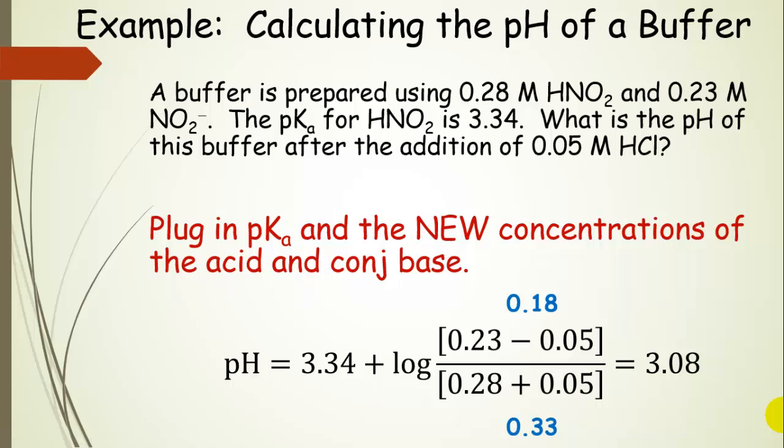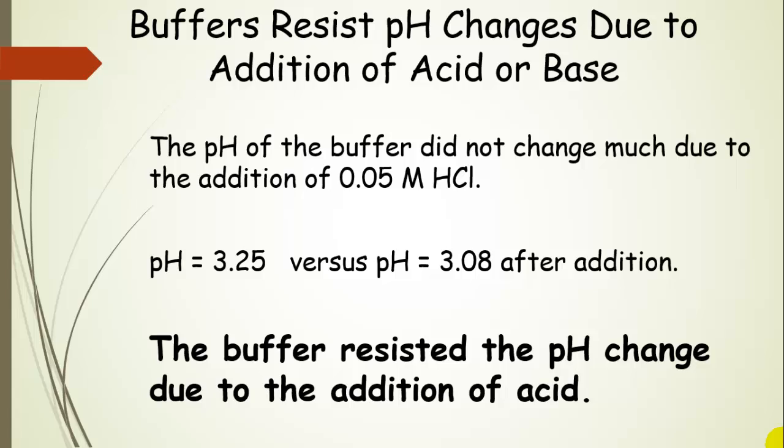And when we do the math, 3.34 plus this log term, log of 0.18 divided by 0.33, we're going to get 3.08. And the pH of our original buffer was 3.25. This buffer resisted a pH change due to the addition of acid. Now we can see that it changed a little bit, but in order to really appreciate the fact that it didn't change very much, even though it changed a little bit, let's compare it to adding strong acid to pure water.